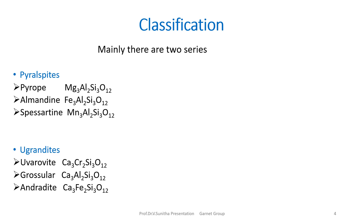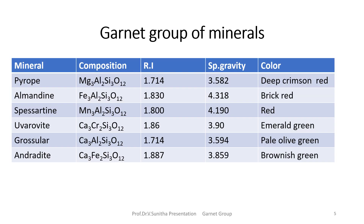Grossular contains calcium and aluminum: Ca3Al2Si3O12. And in Andradite, calcium and iron are present: Ca3Fe2Si3O12.